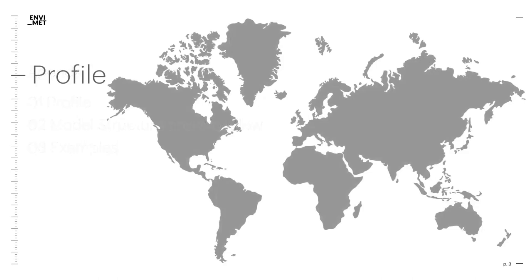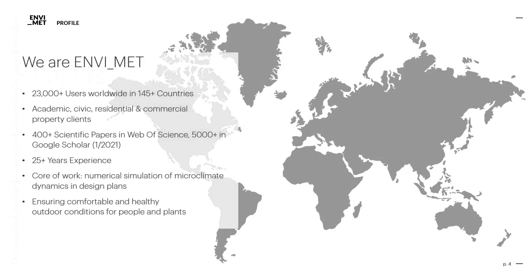So let's talk about our profile first. EnviMet features a huge community with more than 23,000 users worldwide from more than 145 countries. Our program is used by urban planners and architects as well as residential and commercial property clients. However, the greatest success of our software is based on the scientific community that has been using EnviMet for decades. EnviMet, which has been developed for over 25 years now, was used in more than 400 scientific papers found on the Web of Science and even in more than 5,000 studies found via Google Scholar.